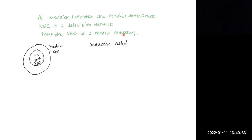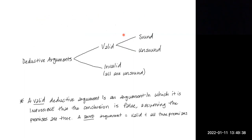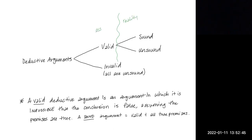Once I've done that, I want to determine whether my deductive argument is sound or unsound. When determining soundness, it requires something more than just assuming the premises are true — at this point, we want to determine whether they actually are true. So I'll draw a line here that says reality versus assumption.